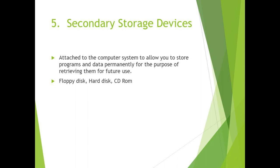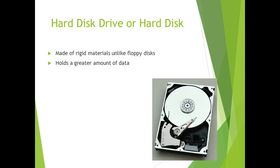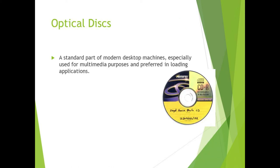Now we turn to output devices — devices used to give out the output generated by a computer. Output devices include speakers, printers, headphones, microphones, and web cameras. A scanner converts a hard copy into a soft copy, so it is an input device. A printer converts a soft copy into a hard copy, so it is an output device.